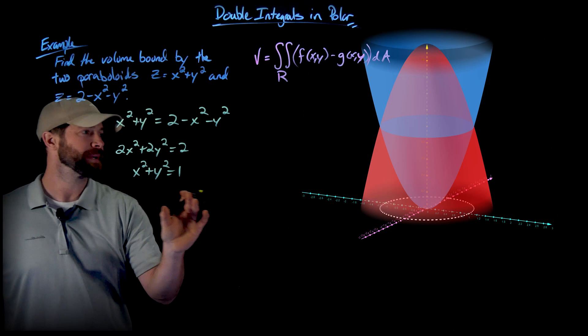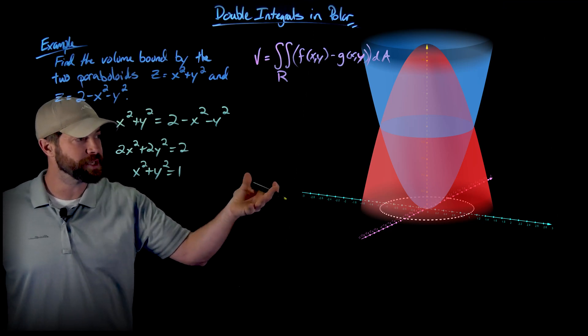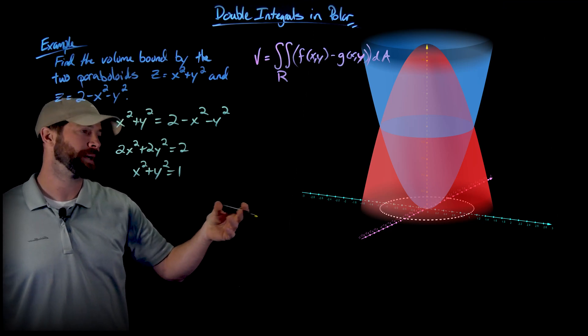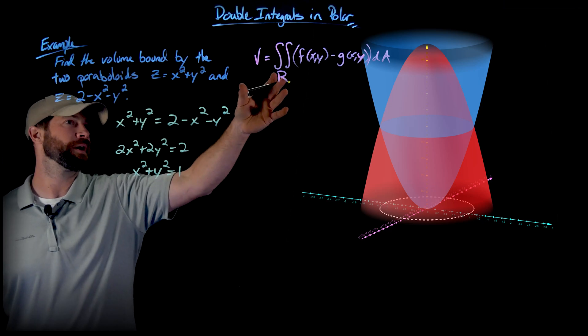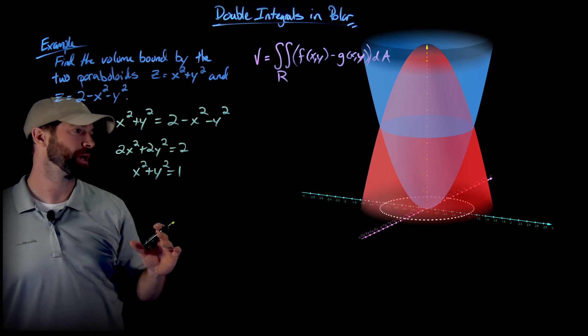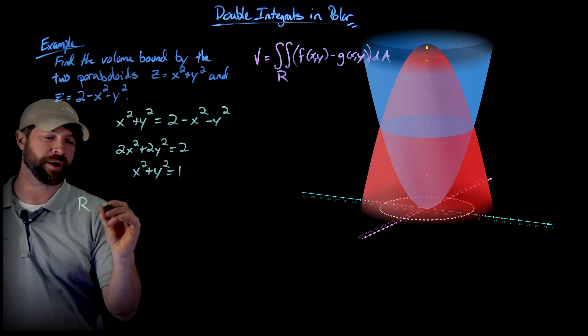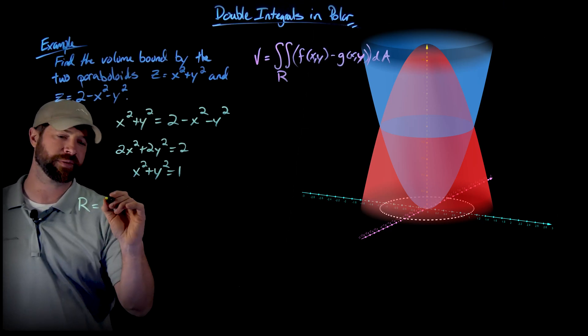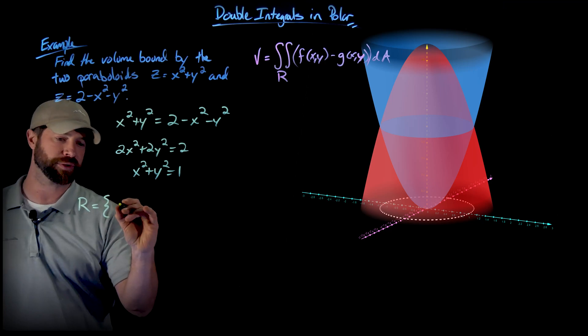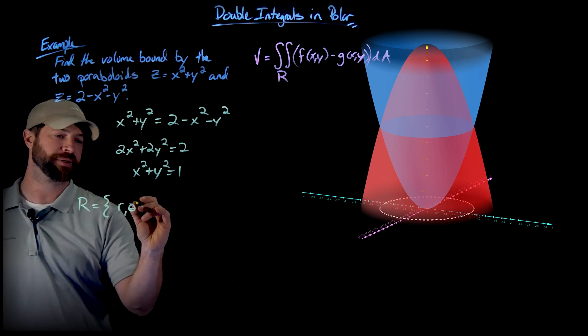And so this is simply confirmation that the region of integration in the xy plane for calculating the volume between these two functions is a circle of radius 1, which means I can define my r in terms of polar coordinates because it's a circle and makes my life a heck of a lot easier.